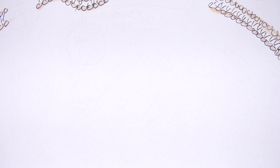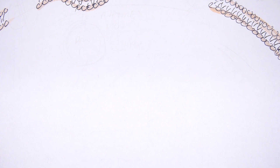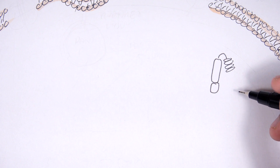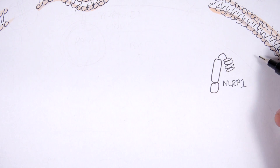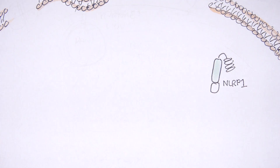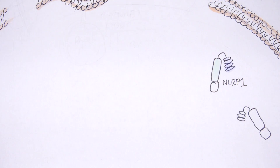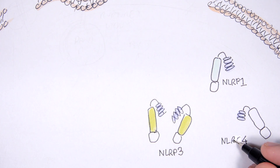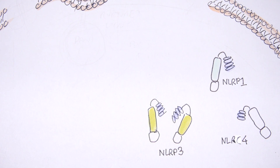NOD-like receptors are cytosolic proteins found within the cytoplasm as monomers, and as monomers they are inactive. We have NOD-like receptor P1, which has a pyrin domain; NOD-like receptor C4, which has a caspase recruitment domain; and NOD-like receptor P3, which also has a pyrin domain.